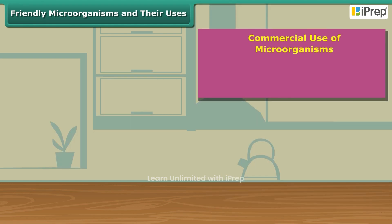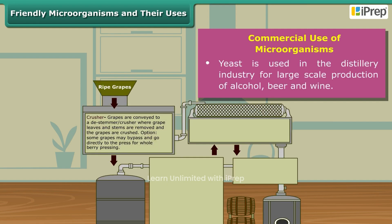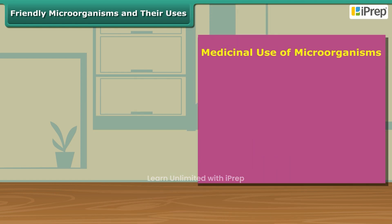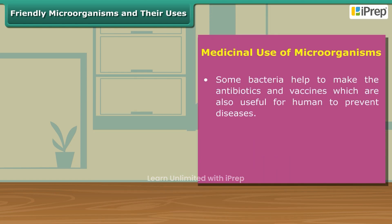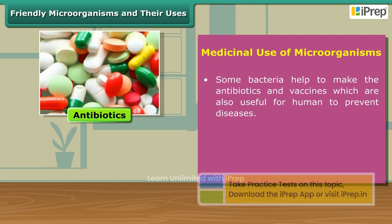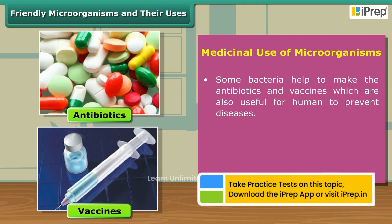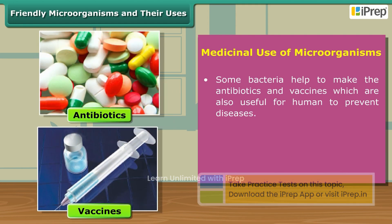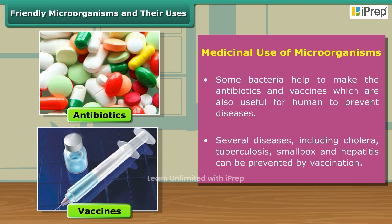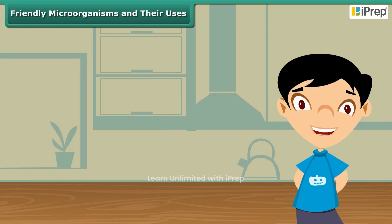Microorganisms are also useful in commercial and medicinal fields. For instance, yeast is used in the distillery industry for large-scale production of alcohol, beer, and wine. Some other bacteria are helpful in the production of antibiotics and vaccines. Vaccination is helpful in several diseases including cholera, tuberculosis, smallpox, and hepatitis.